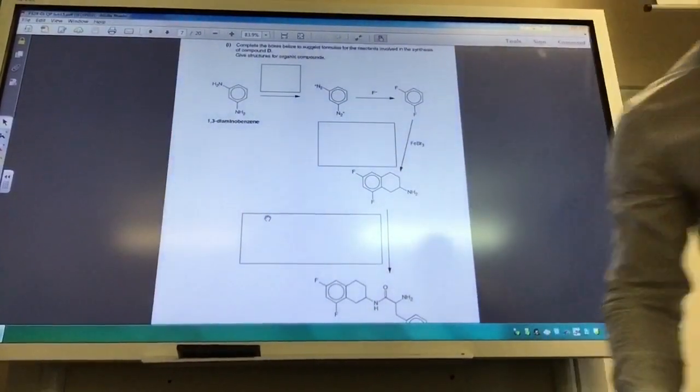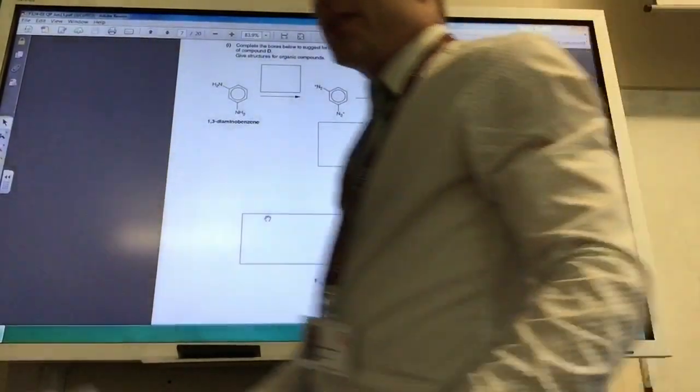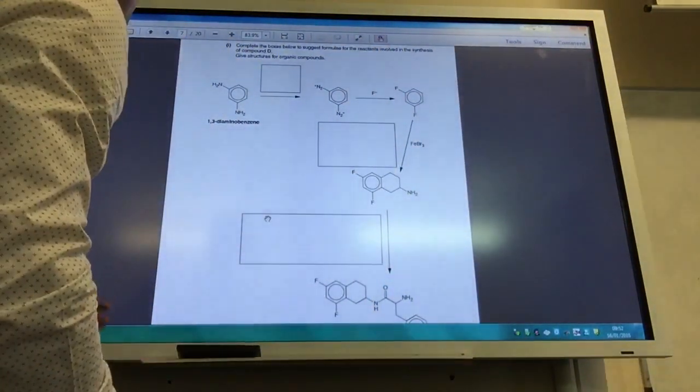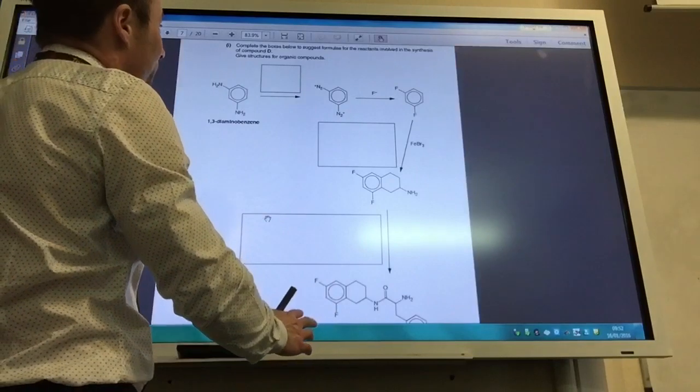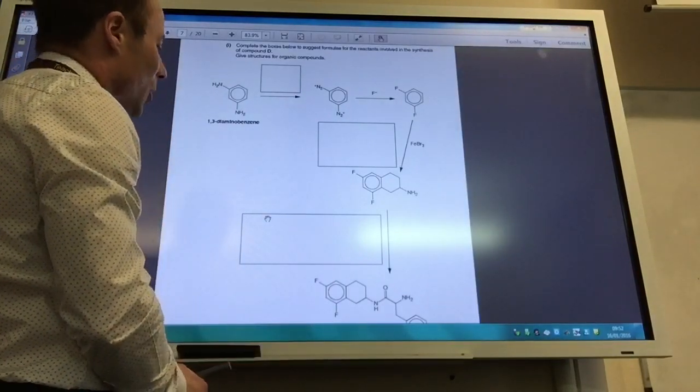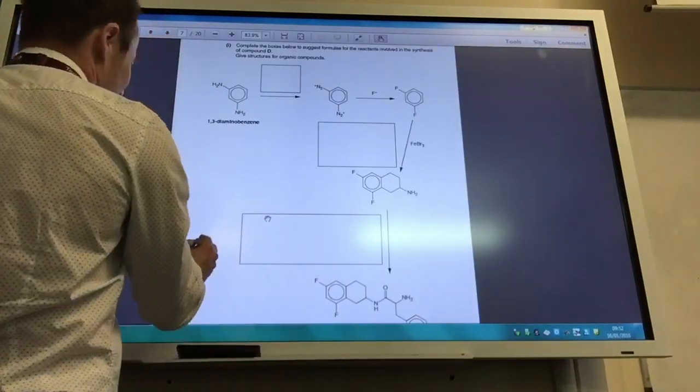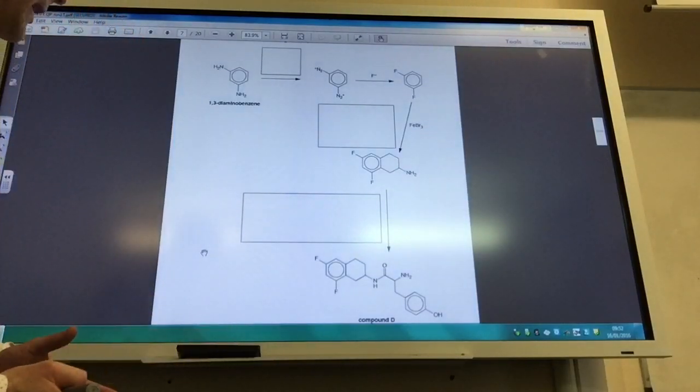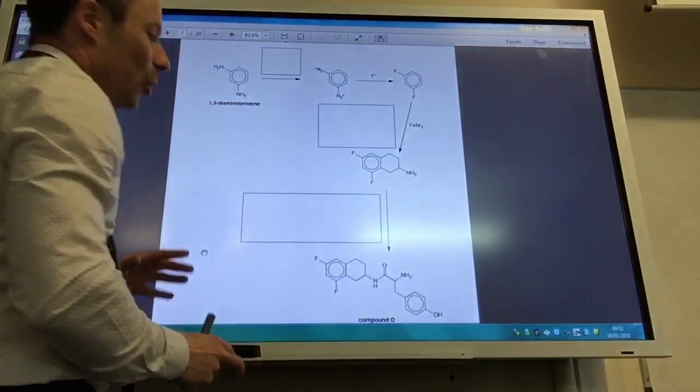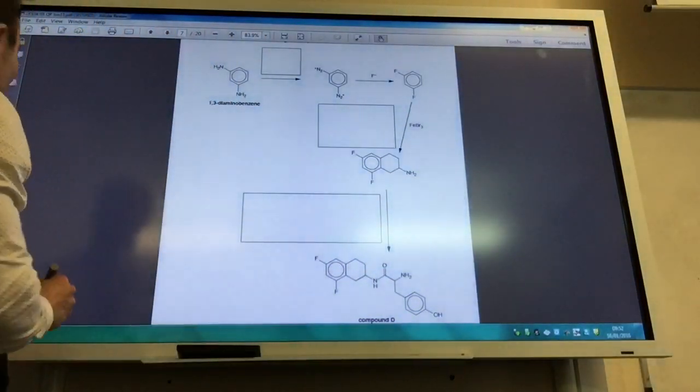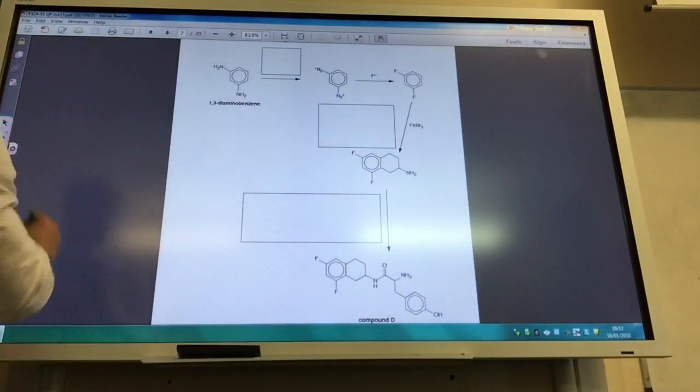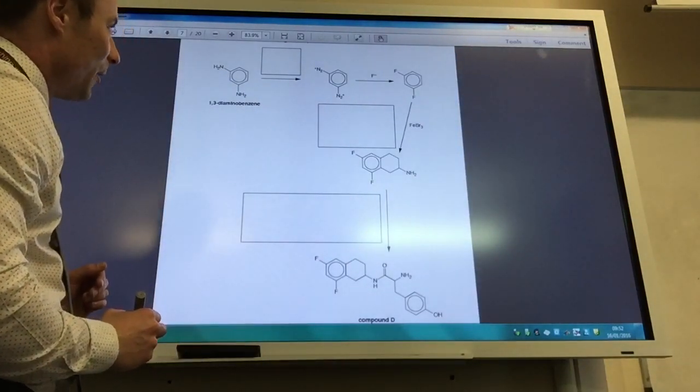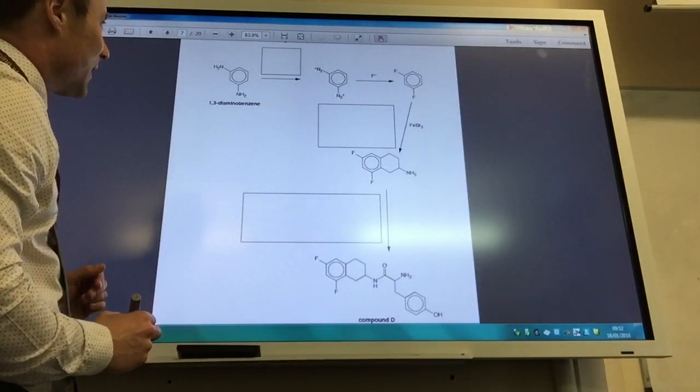Okay, so this is quite an involved synthesis. I've had to make it a bit small so we can see it, but hopefully you can. Complete the box below - suggest reagents for the reactions involved in synthesis of compound D, which is going to be this boy here. He looks incredibly complicated, but you can see they are adding molecules together. Let's try and break this up a little bit to see if we can figure out what's actually going on.